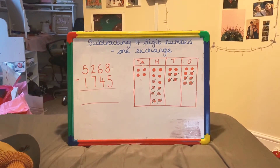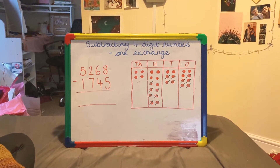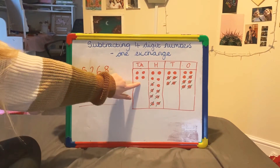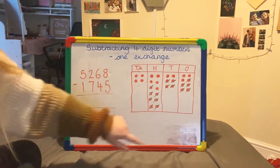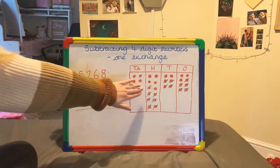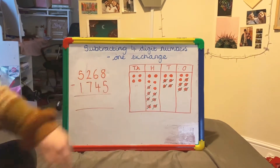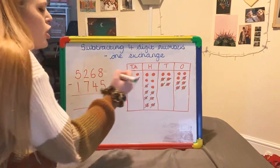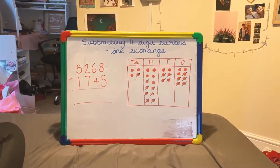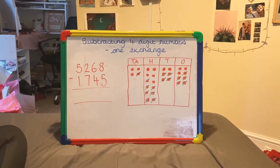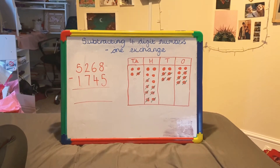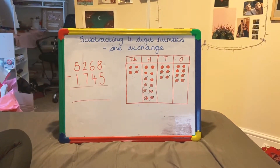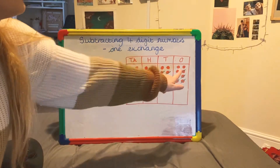Now I move on to my final column, the thousands column. It did say I had 5,000, but we know we exchanged one of those counters for the hundreds counters. So we now have 4,000 take away 1,000, putting a cross through one of those thousands. Now I can calculate my answer — how many counters do we have in the thousands column without a cross through them? 1, 2, 3.